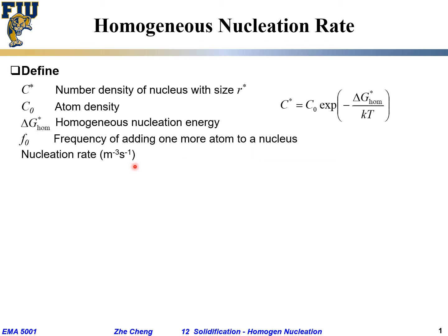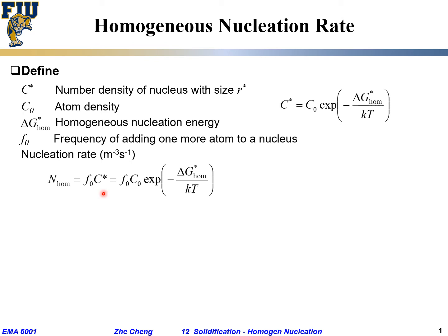The homogeneous nucleation rate N_homo, in units of per unit time per unit volume, equals f0 — the frequency of adding one more atom — times C*, the number density of nuclei at the critical size R*. For a critical nucleus, adding just one more atom makes it larger than the critical size, so from that point forward the free energy change is downhill and growth becomes spontaneous.